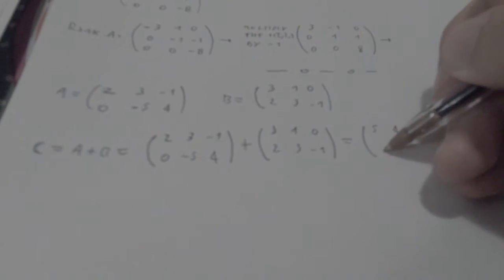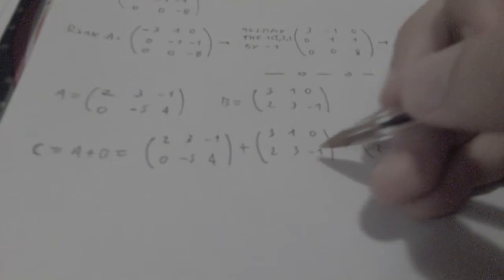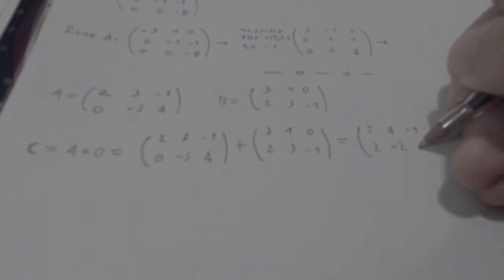0 plus 2 is 2, negative 5 plus 3 is negative 2, and 4 plus negative 1 is 3.